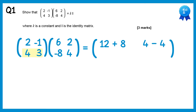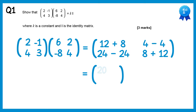Then 4, 3 with 6, negative 8: 4 times 6 is 24, and 3 times negative 8 is negative 24, so 24 take 24. And finally 4, 3 with 2, 4: 4 times 2 is 8, and 3 times 4 is 12, so we have 8 add 12. Working these out: 12 plus 8 is 20, 4 take 4 is 0, 24 take 24 is 0, and 8 add 12 is 20.